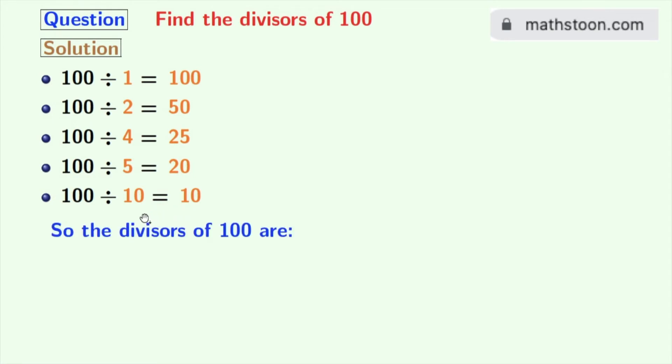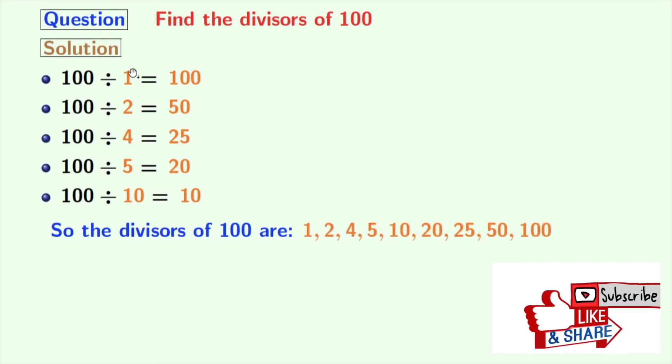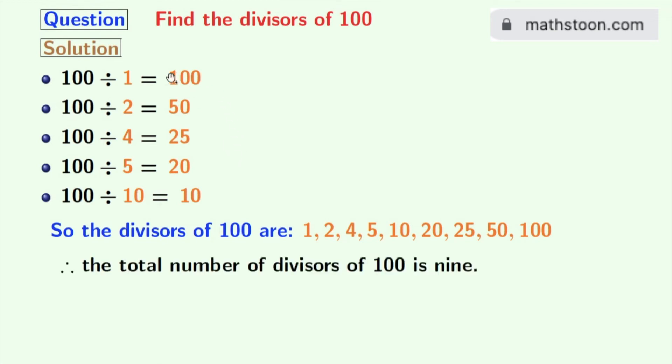Now look that we have all the divisors of 100 in orange colors. These numbers are 1, 2, 4, 5, 10, 20, 25, 50 and 100. So, the total number of divisors of 100 is 9.